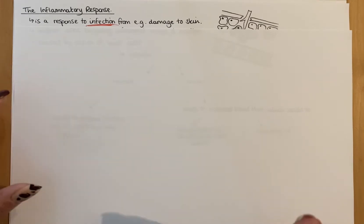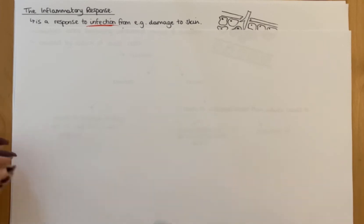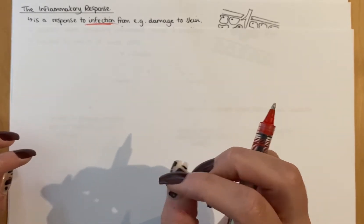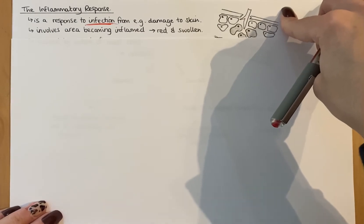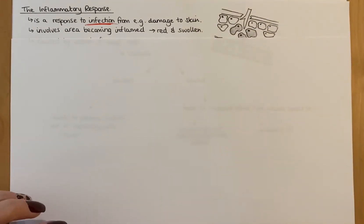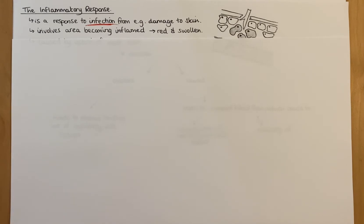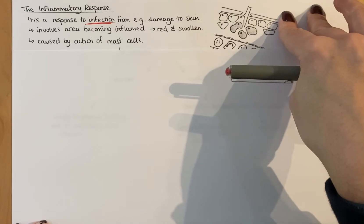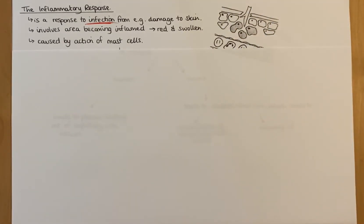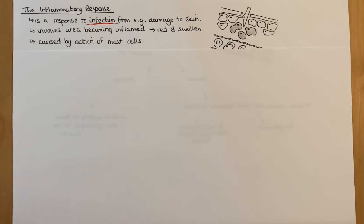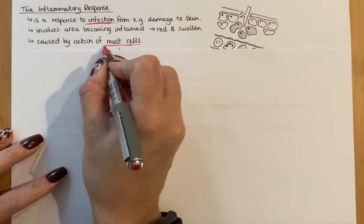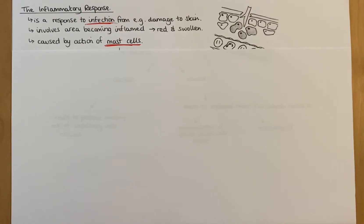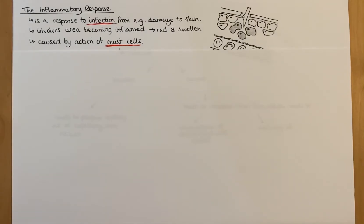It can also apply to something like having a cold and how sore your throat gets - that would be infection of your respiratory tract and the epithelial cells within it. The inflammatory response involves the area becoming inflamed, which means it becomes red and swollen. The reason this happens is because of a particular type of cell called a mast cell - this is a really common exam answer. If asked to name the cell responsible for the inflammatory response, the answer is mast cells.